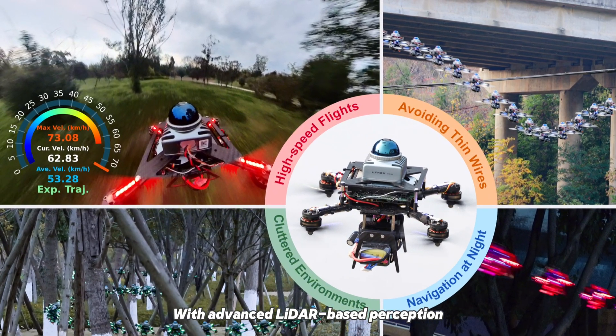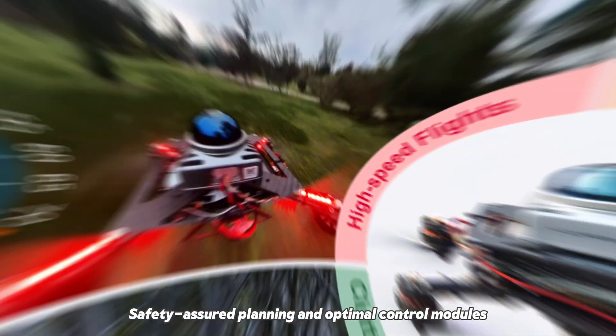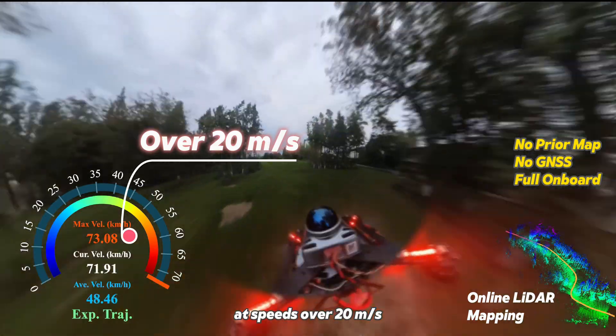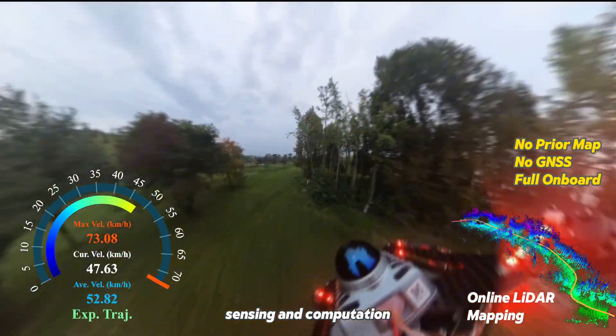With advanced LiDAR-based perception, safety-assured planning, and optimal control modules, Super navigates unknown environments at speeds over 20 meters per second, relying entirely on onboard sensing and computation.